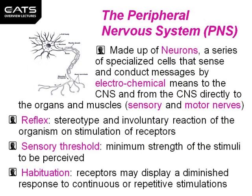The peripheral nervous system is made up of the neurons that go from the spinal cord to the tissues, known as motor neurons, and those coming back, known as sensory neurons.